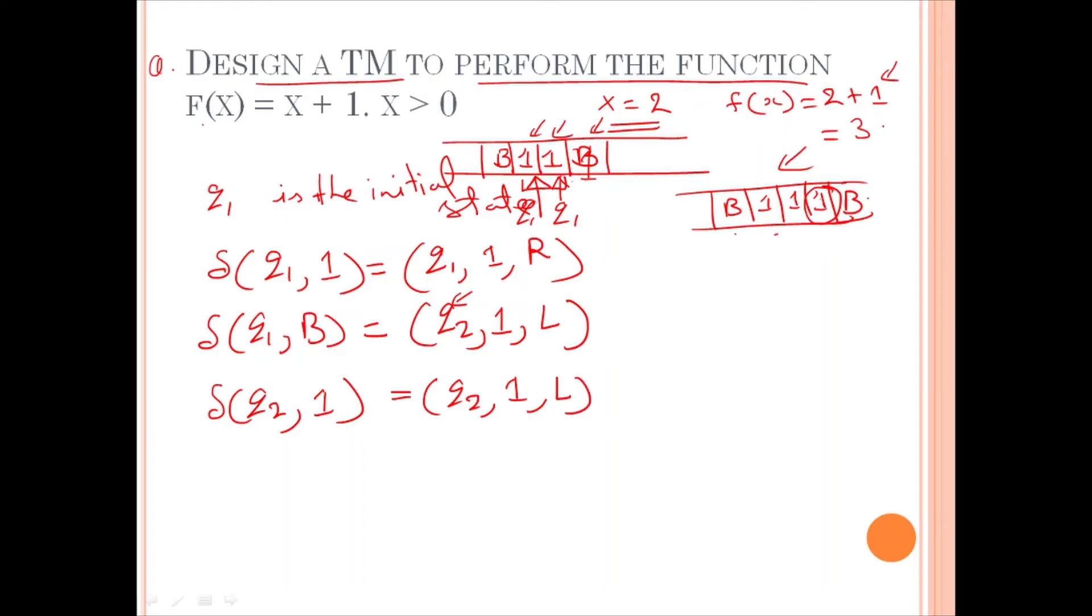This will happen till you reach a particular blank symbol. So, that is going to be mapped by this transition, q2, blank symbol. And here, you are going to have one final state, writing blank and moving towards the left. Now, you are not defining any move. So, machine is going to halt.